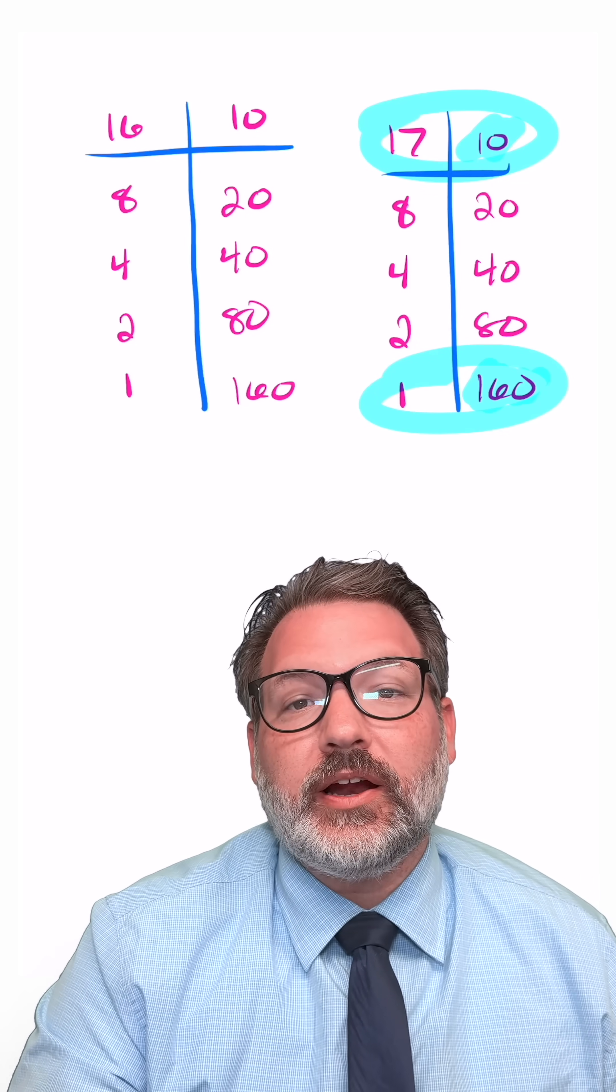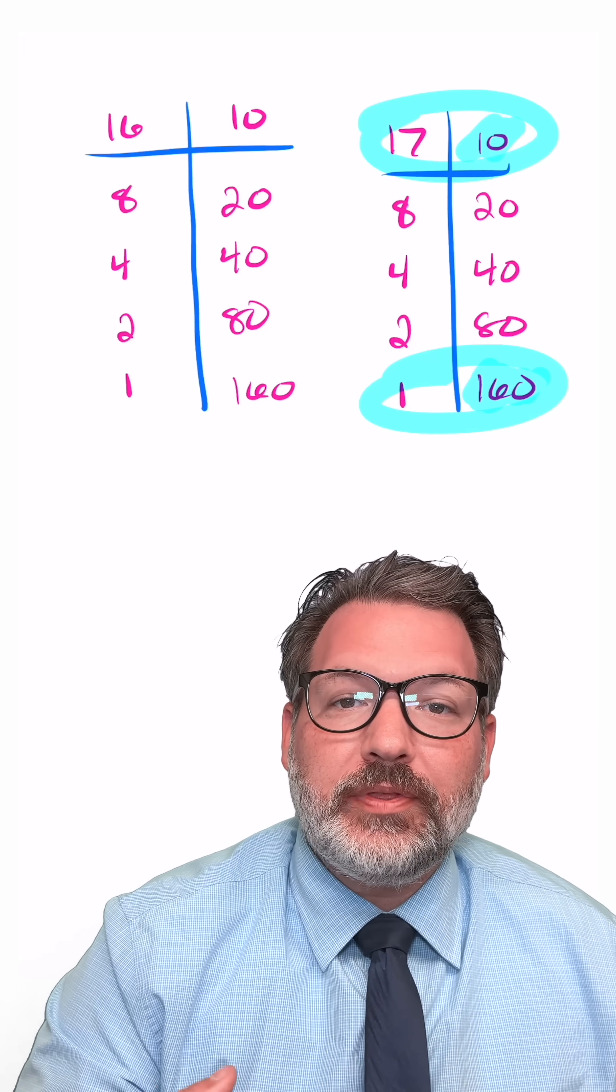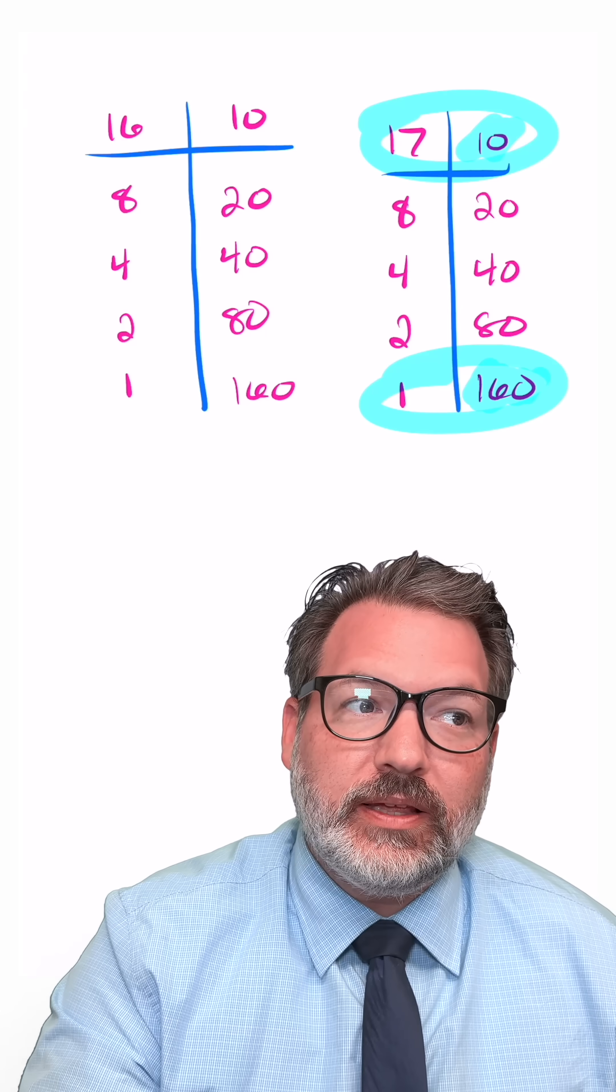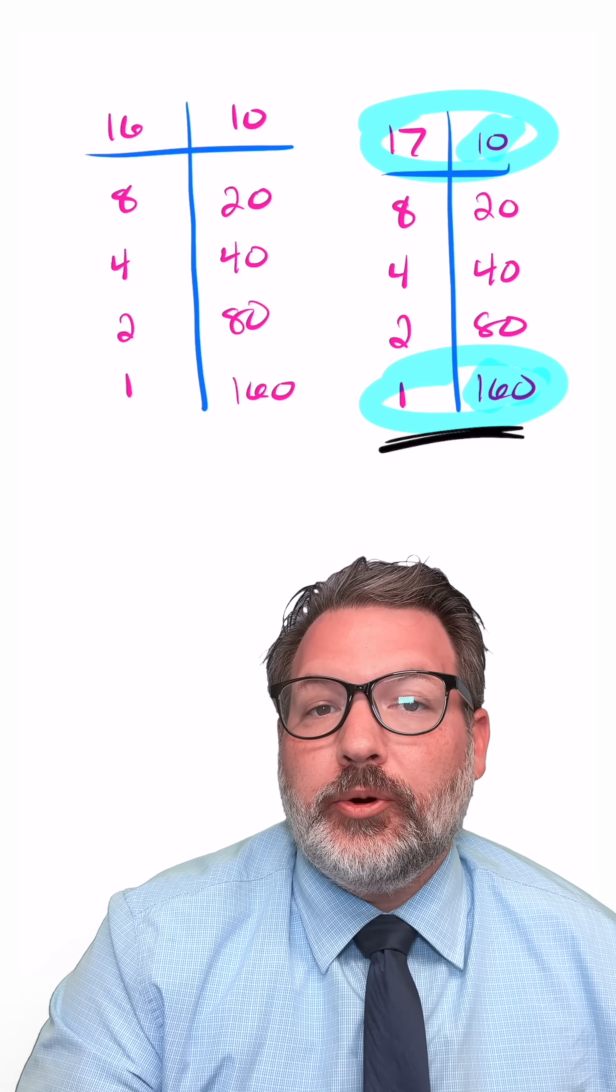Anytime we have numbers here on the left that are even, we're just passing down the entirety of that product to the next row. Eventually, of course, ending at 1 no matter what.